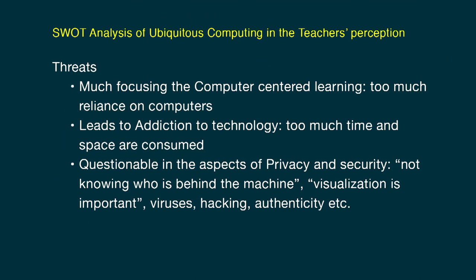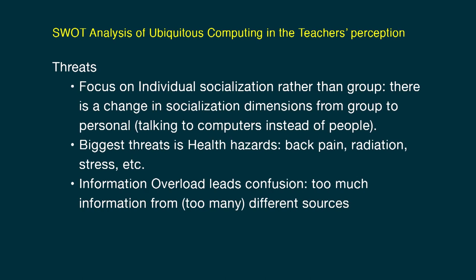The threats of ubiquitous learning include: too much focus on computer-centered learning, leading to addiction to technology; too much time and space consumed through technology devices; questionable privacy and security — not knowing who is behind the machine, risks of viruses, hacking, and issues of authenticity; a change in socialization from group to personal — talking to computers instead of people; health hazards such as back pain, radiation, and stress; and information overload causing confusion from too many sources.